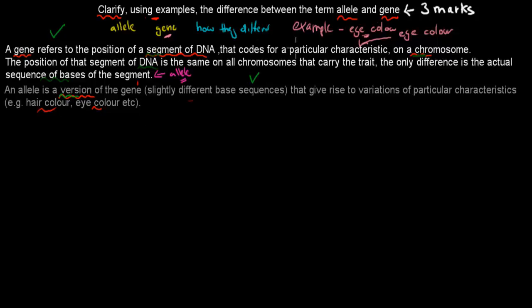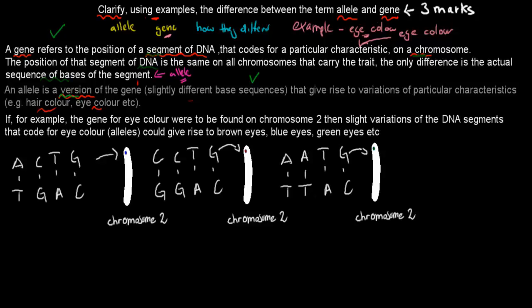So now I've just quickly gone over what an allele was and how that's a bit different to a gene, just because an allele is actually a version of a gene. And now I'm going to give the actual example. It's now two marks so far, and then the example will get us our final mark. If, for example, the gene for eye color were to be found in chromosome 2, again I made that up. Then slight variations of the DNA segments that code for the eye color could give rise to brown eyes, blue eyes, and green eyes. So if you only had one version of a gene, we would all have the same eye color. But because there are different versions of that same gene, there are people who have brown eyes, blue eyes, and green eyes.